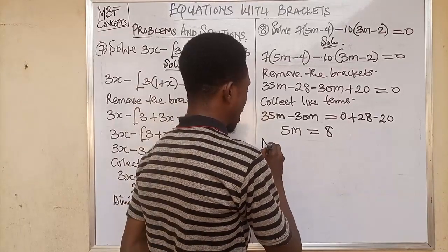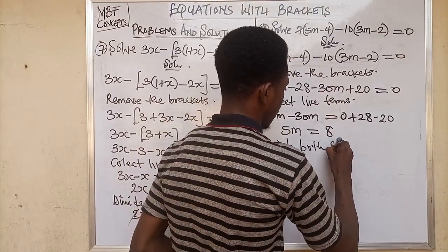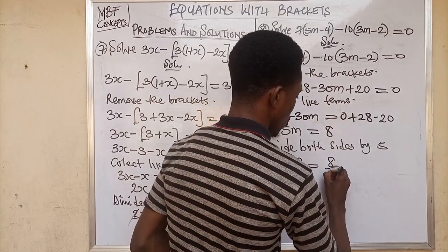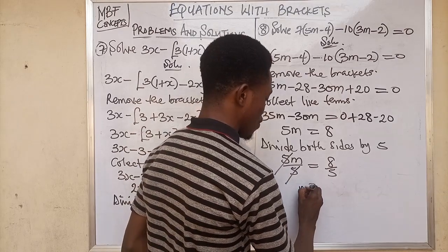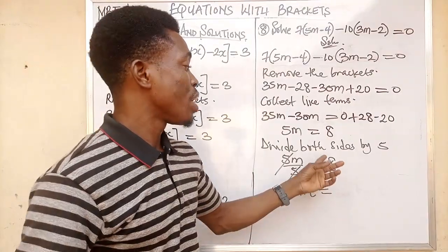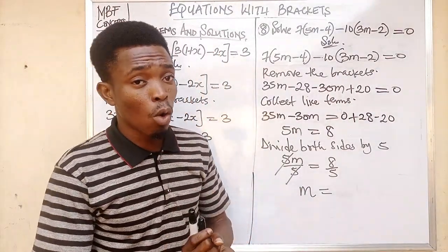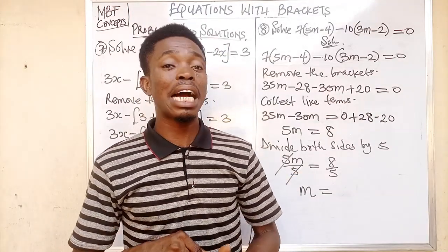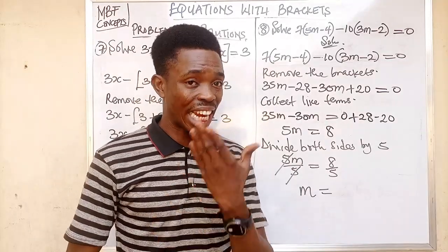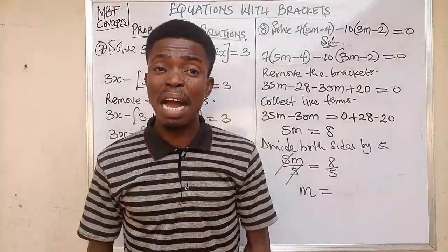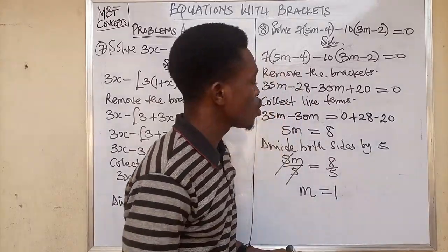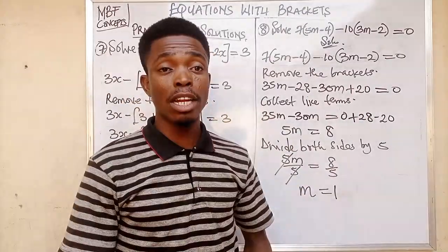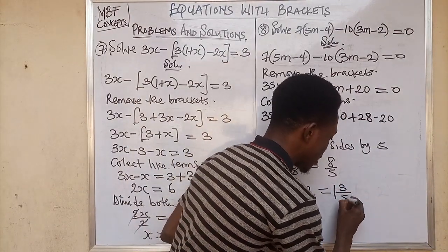We divide both sides by 5. So 5m over 5 equals 8 over 5. 5 divided by 5 gives 1m. Now 8 divided by 5 — since 8 is not directly divisible by 5, we express it as a mixed fraction. We find how many times 5 enters 8, which is 1. Then multiply 5 by 1 to get 5, and remove 5 from 8 to get a remainder of 3.